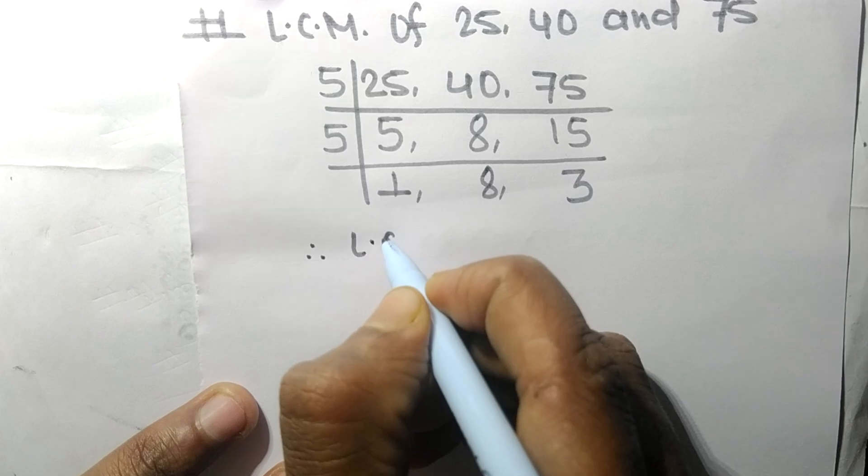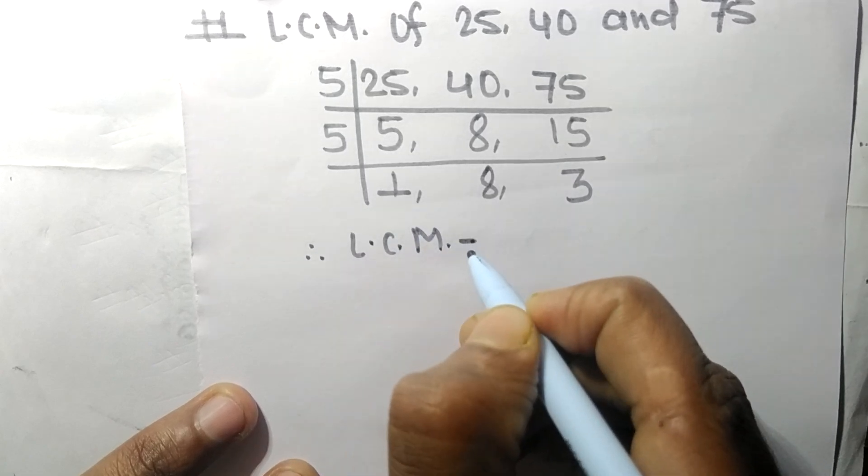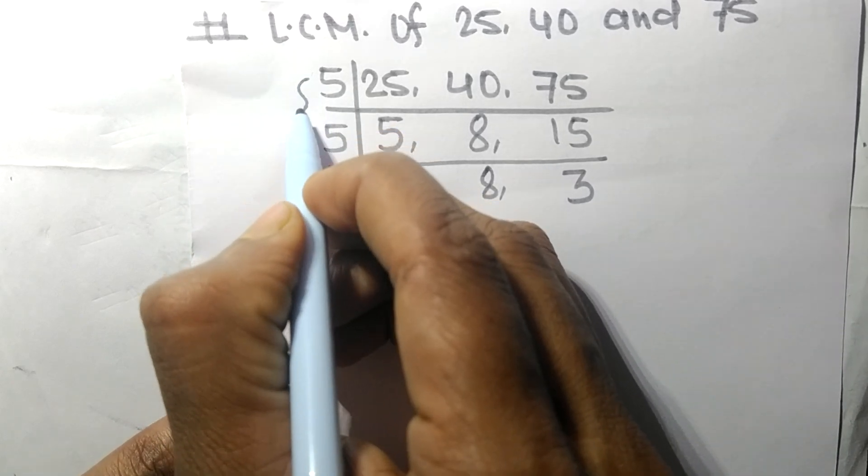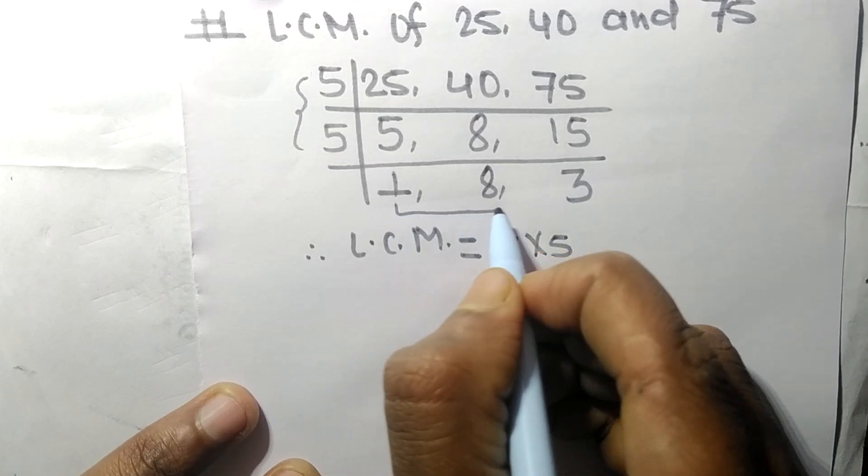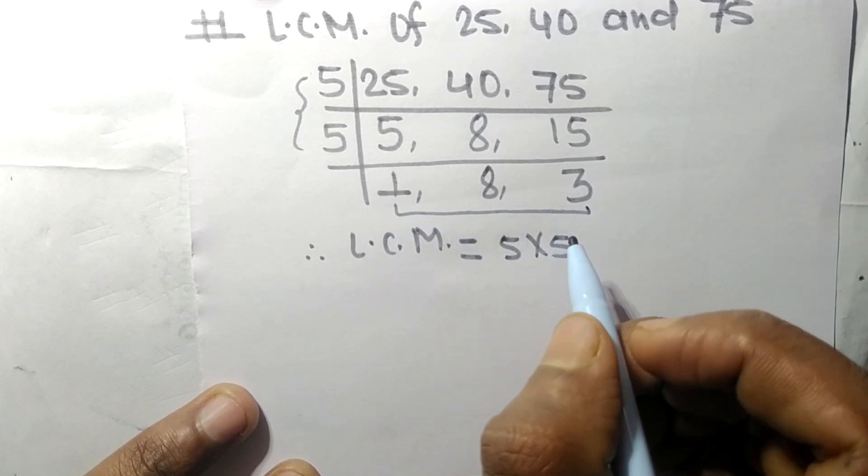So now the numbers 1, 8, and 3 are not divisible by same number. Therefore, it's LCM is equal to, from this side it is 5 into 5.